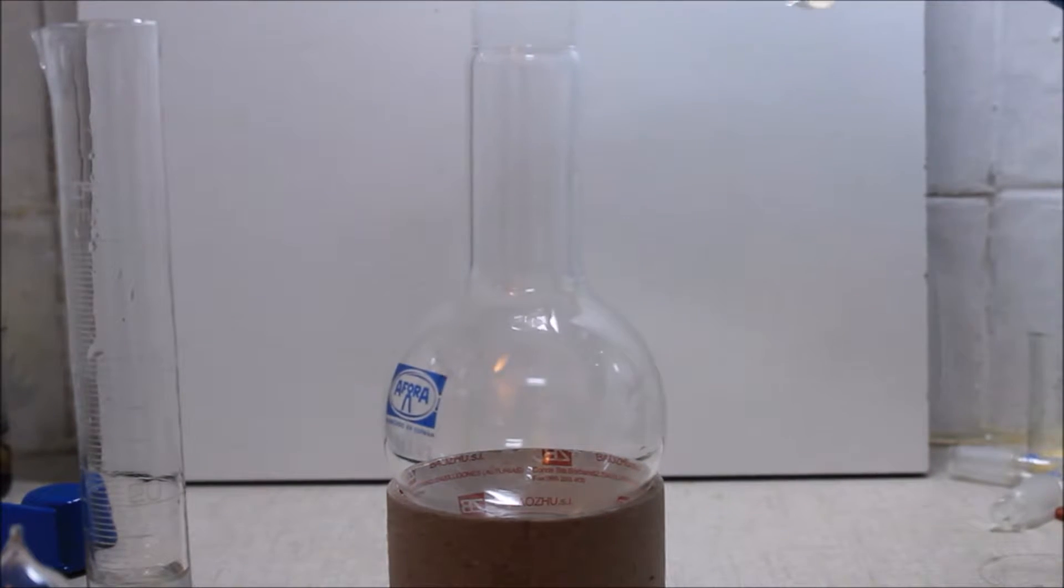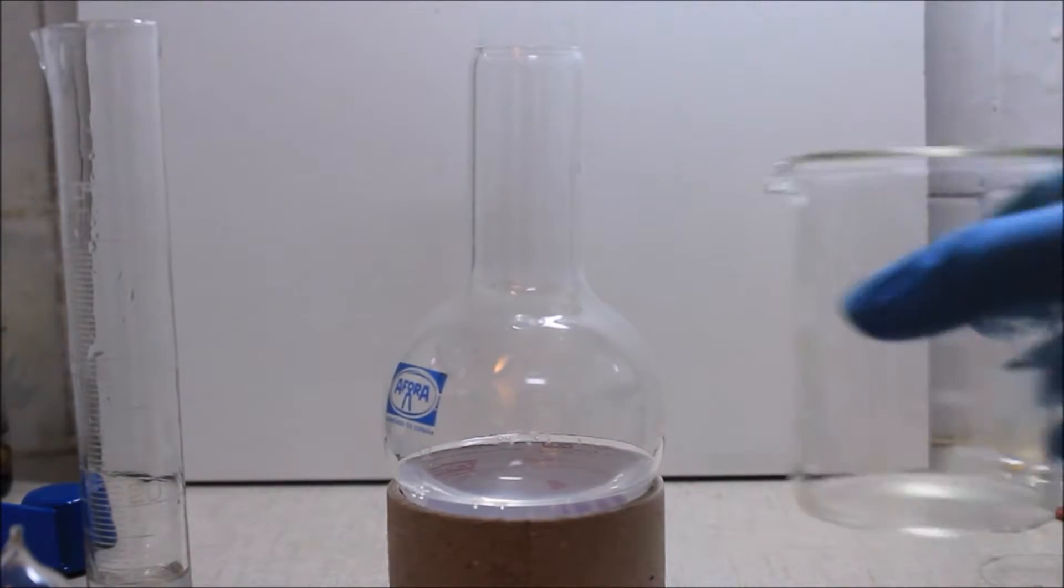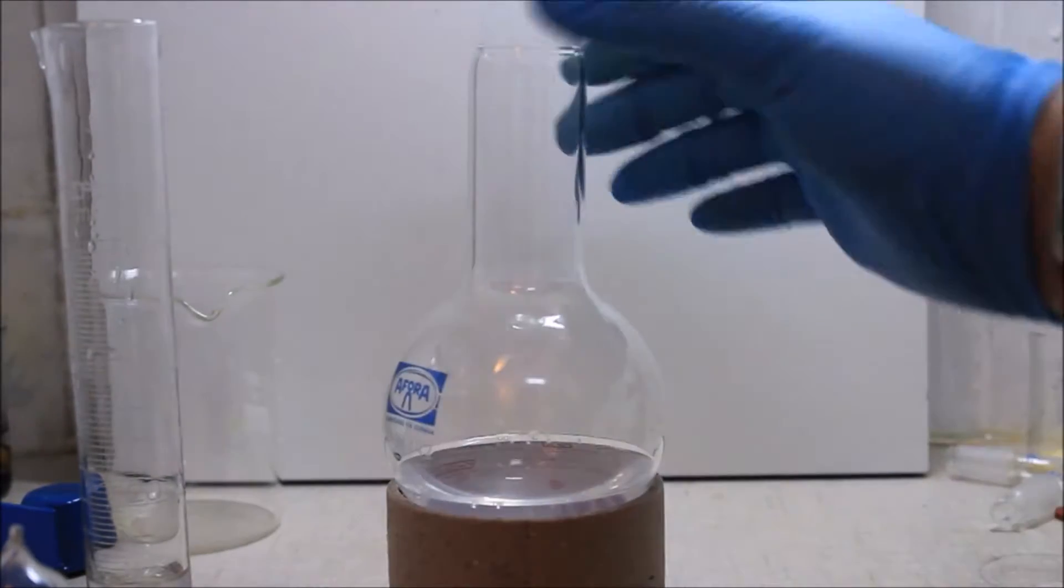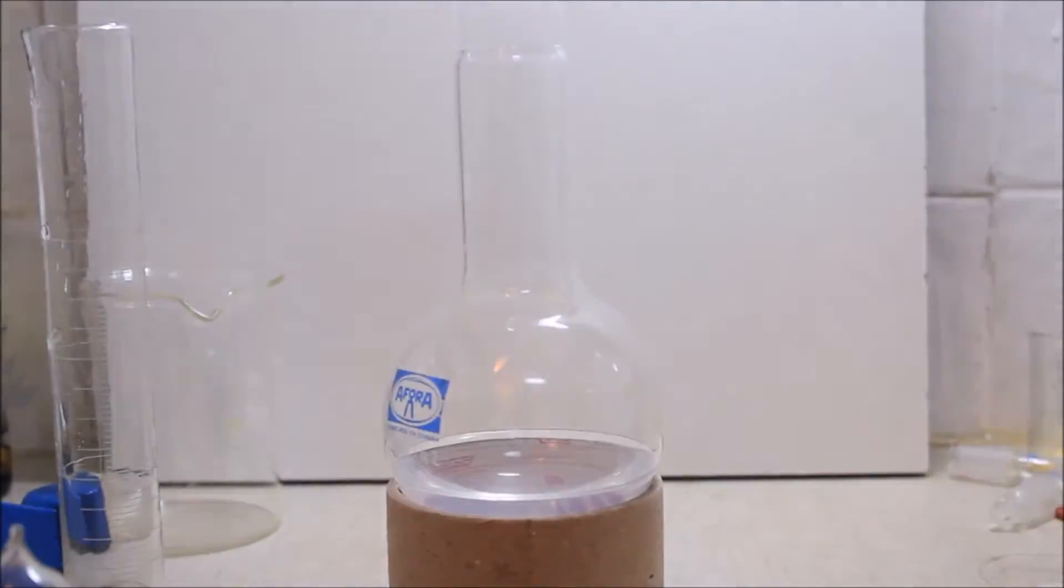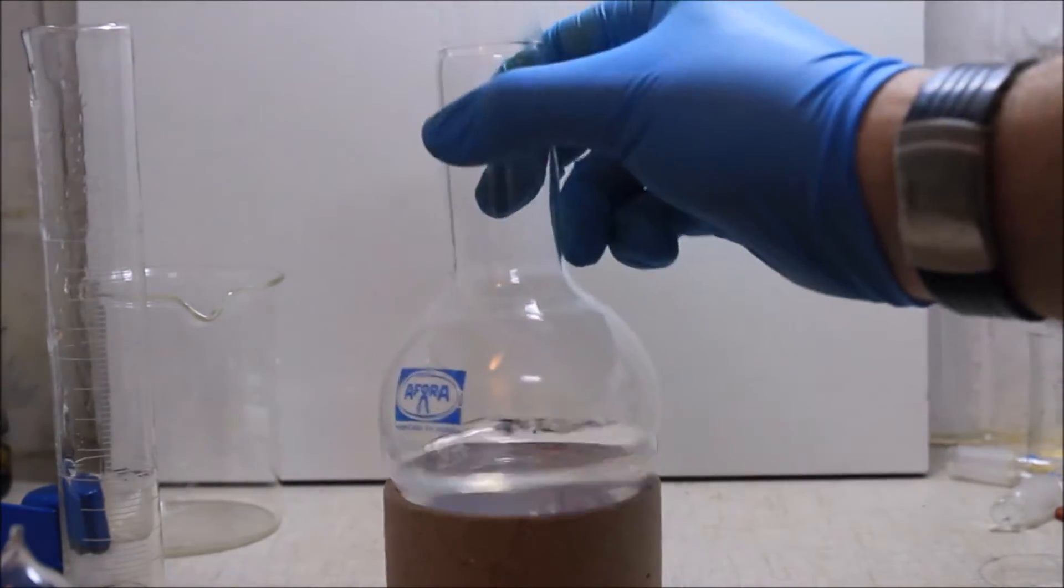Now the silver diamine complex solution is poured into an RB flask or any other container. The flask has been cleaned thoroughly with nitric acid and distilled water. If not, the mirror will not be as shiny as expected. Then 5 milliliters of the glucose solution is poured into the RB flask.